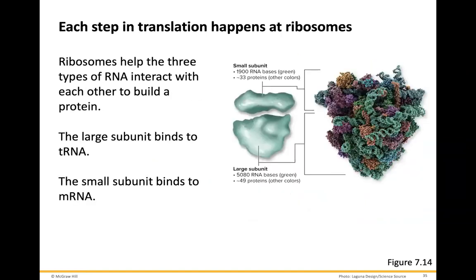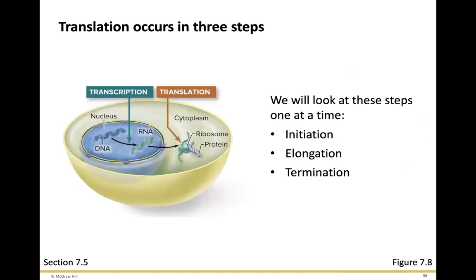Each step in translation occurs at the ribosomes. Ribosomes help the three types of RNA interact with each other to build a protein. The large subunit binds to the transfer RNA, and the small subunit binds to the messenger RNA. Translation also occurs in three steps: initiation, elongation, and termination.